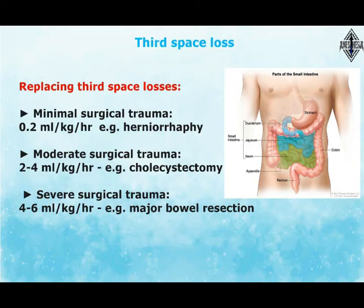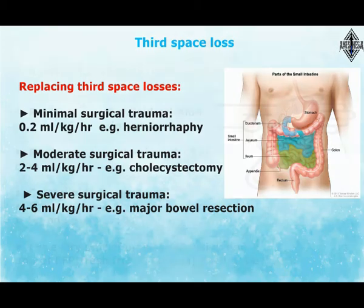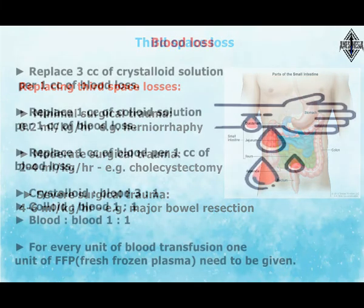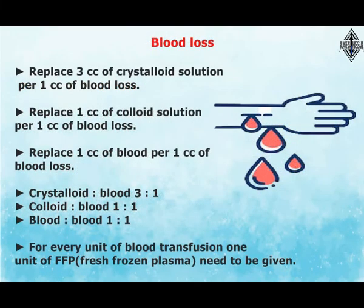Third space loss depends on the location and duration of the surgical procedure, amount of tissue trauma, room ventilation, and ambient temperature. Replacement rates: minimal surgical trauma — 0 to 2 ml/kg/hr (e.g., herniorrhaphy); moderate surgical trauma — 2 to 4 ml/kg/hr (e.g., cholecystectomy); severe surgical trauma — 4 to 6 ml/kg/hr (e.g., major bowel resection).